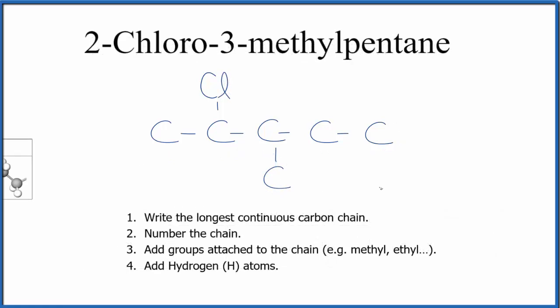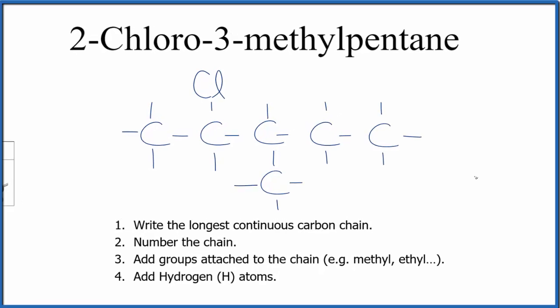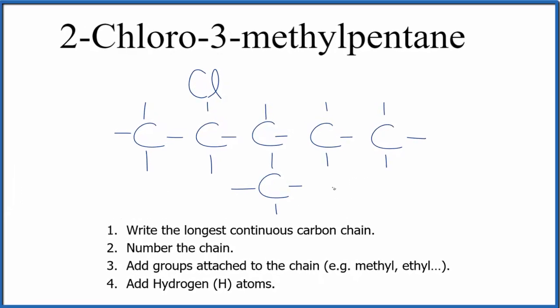And finally, we can add hydrogens on each of the carbons. Carbons will be bonded to four things in an alkane. So, each carbon needs four bonds. We have 1, 2, 3, 4. Here, we have 1, 2, 3. So, we'll add a hydrogen here. 1, 2, 3. And so on. I won't write the hydrogen atoms here for this video.